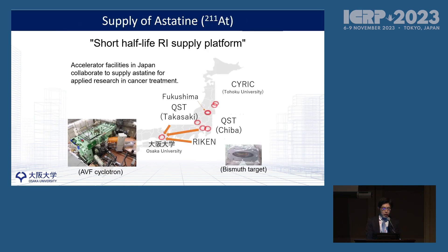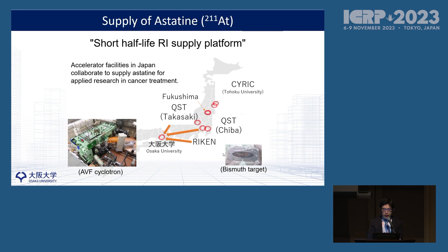In Japan, there are several sites with accelerators that can produce Astatine-211. At Osaka University, we have an AVF cyclotron, so we can produce Astatine on campus and get direct supply from this accelerator facility. In addition, we have other facilities in Japan — Riken, QST, and Fukushima — so we can also get supply from these facilities in the form of irradiated bismuth targets. There are therefore several methods to obtain a supply of Astatine-211.